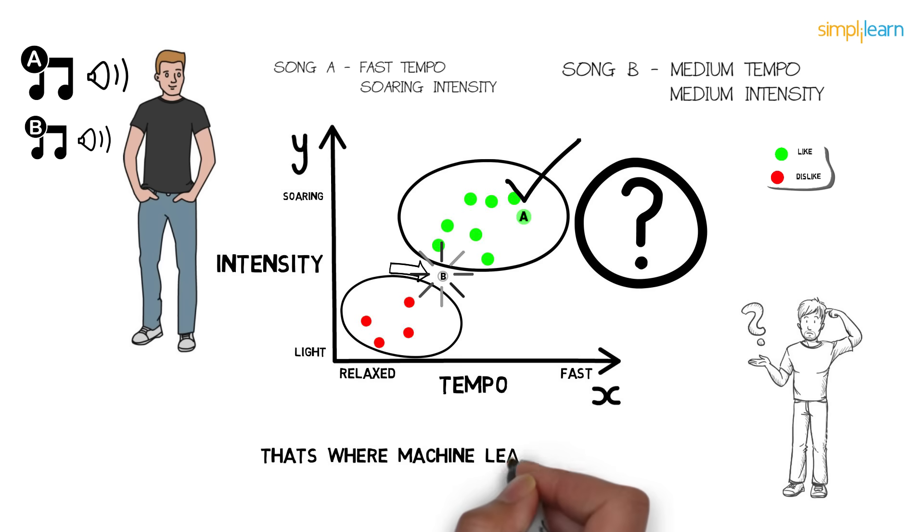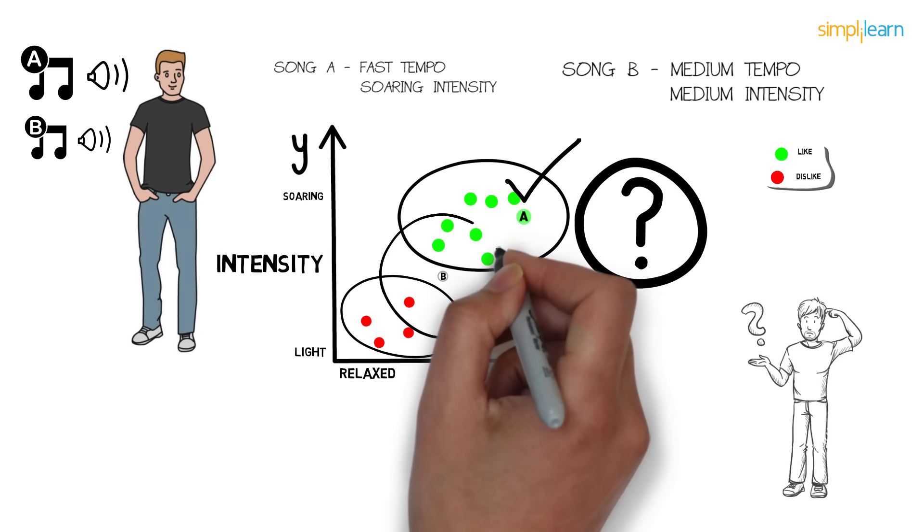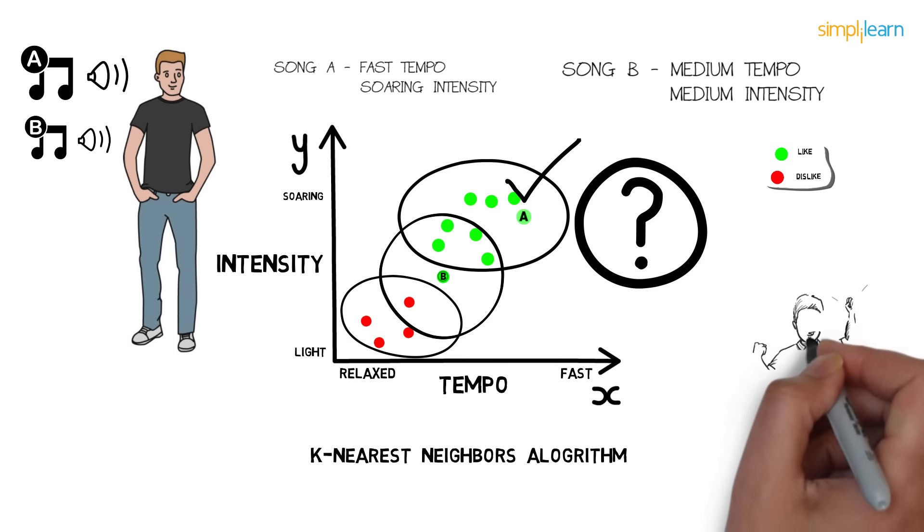We could easily classify song A, but when the choice became complicated, as in the case of song B, that's where machine learning comes in. Let's see how. In the same example for song B, if we draw a circle around the song B, we see that there are four votes for like, whereas one vote for dislike. If we go for the majority votes, we can say that Paul will definitely like the song. This was a basic machine learning algorithm called K-nearest neighbors. This is just a small example in one of the many machine learning algorithms. Quite easy, right?